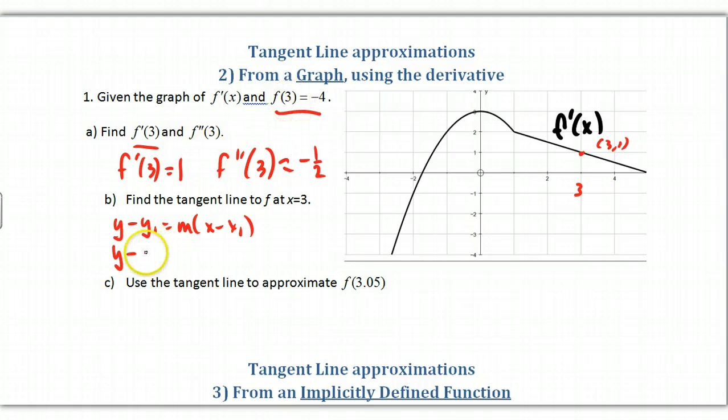That's the point on F, 3 comma negative 4. That's the point I'm going to use, and the slope is going to be the 1 from F prime of 3. Then I'm going to just plug and chug. There's my tangent line approximation. For part C, we want to approximate what happens at 3.05. I trust that you can plug in 3.05 there for X and solve for Y. That's all you have to do.